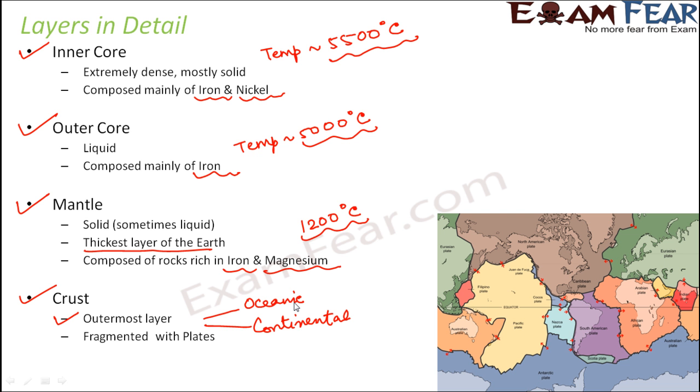Continental crust forms the layer located under the continents, so it is comparatively thicker. Oceanic crust is the thinner part of the crust and continental crust is the thicker part of the crust. But crust is anyway a thin layer. It is not a very thick layer when compared to mantle and the cores.